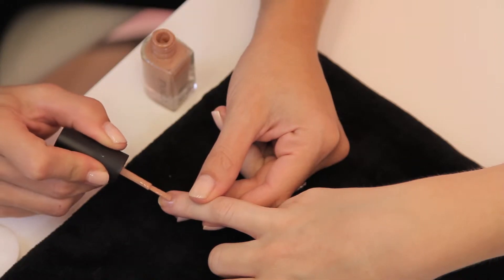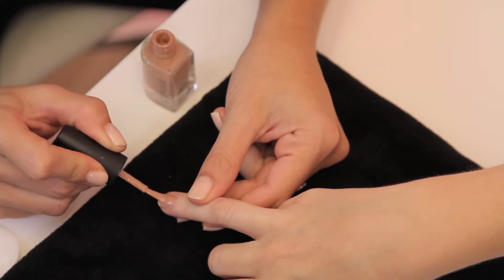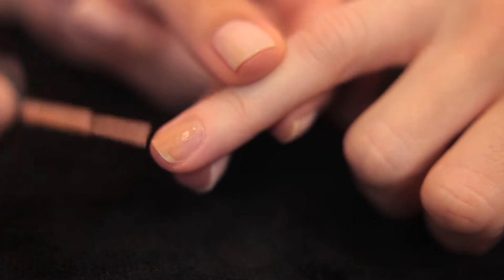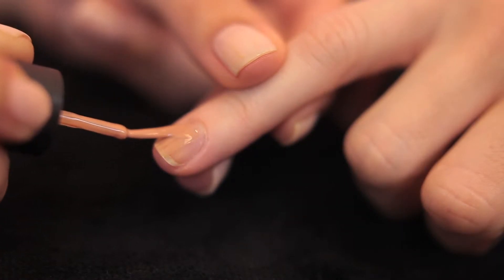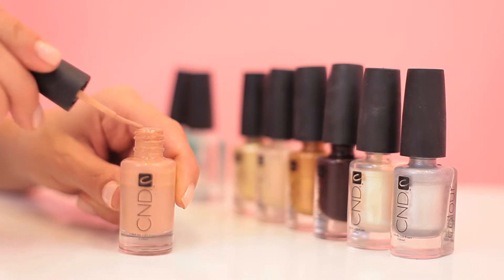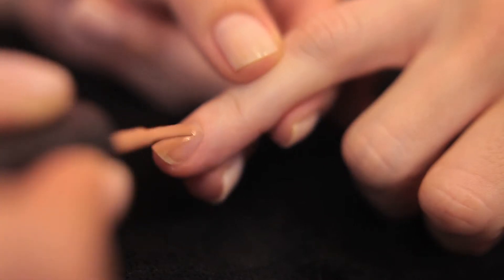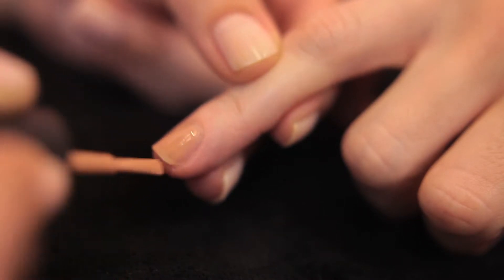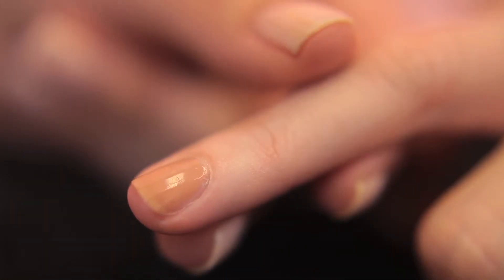Apply one thin coat of Desert Suede. Our golden rule with color is always the thinner the better. A good trick to get the perfect amount of product is to drag the polish off the neck of the bottle and then apply your brush parallel to the nail.